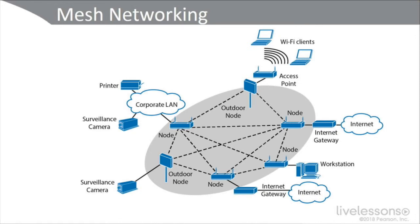We also need thorough wireless analysis of the outdoor area so that antennas and nodes are placed strategically, cells have good overlap, and there's no interference with nearby businesses or infrastructure like airports. Because of the IoT, devices participating in mesh networks can run the gamut — even wearable technology and smart clothing — which introduces significant security and privacy issues.